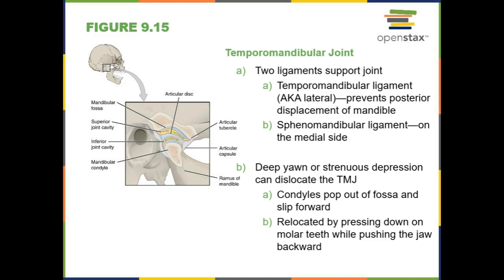There are two major ligaments that hold this joint in place. The temporomandibular ligament, also known as our lateral ligament, because it is found on the lateral side of the joint. It attaches the temporal bone to the mandible and holds the jaw in place. Then we have the spinomandibular ligament, also known as the medial ligament, because it's on the medial side.